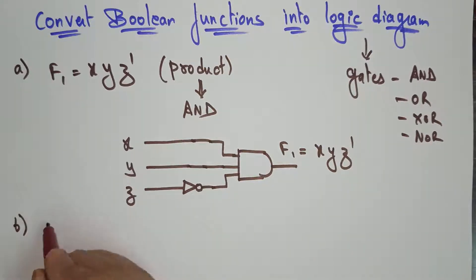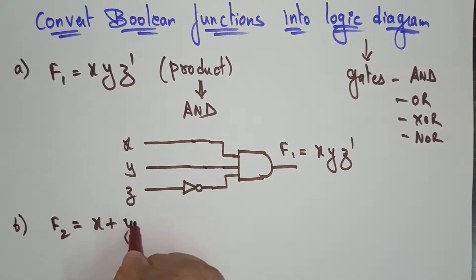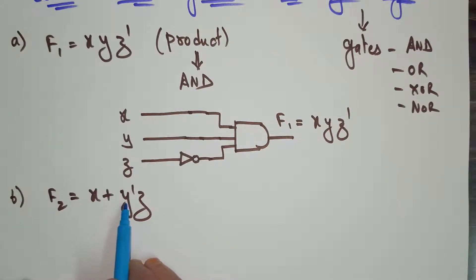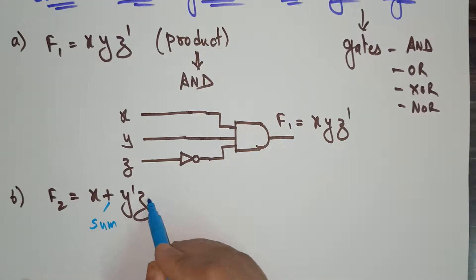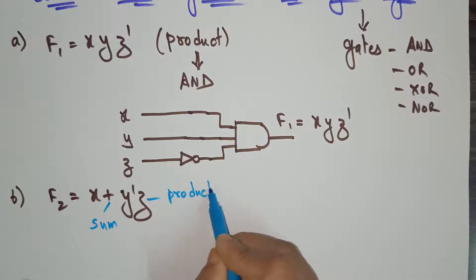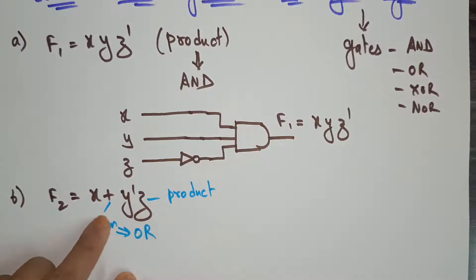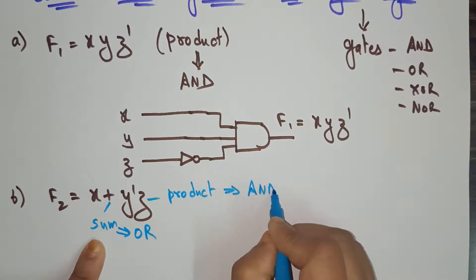Let's see another example. Here I am taking another boolean function: F2 = x + y'z. The first step is to observe the boolean function and identify what gates are included. Here y'z is a product and the '+' represents a sum. Whenever the sum is there, we use the OR gate, and whenever there is a product, we use the AND gate.